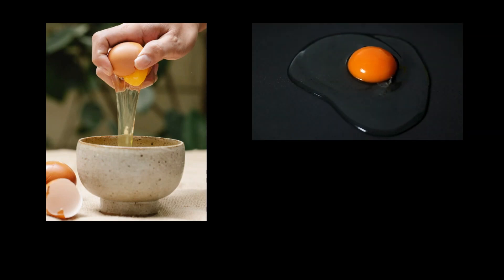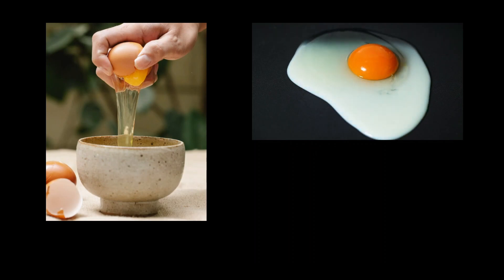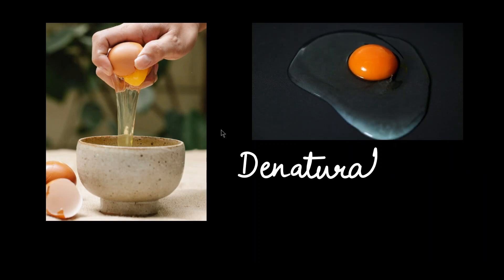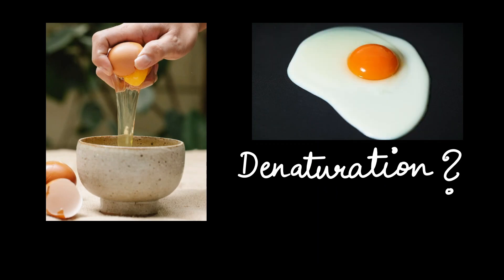An egg transforms when heat is applied, but did you know that it's losing its structure? This is a process called denaturation. To understand this, we first need to know how proteins get their structure.